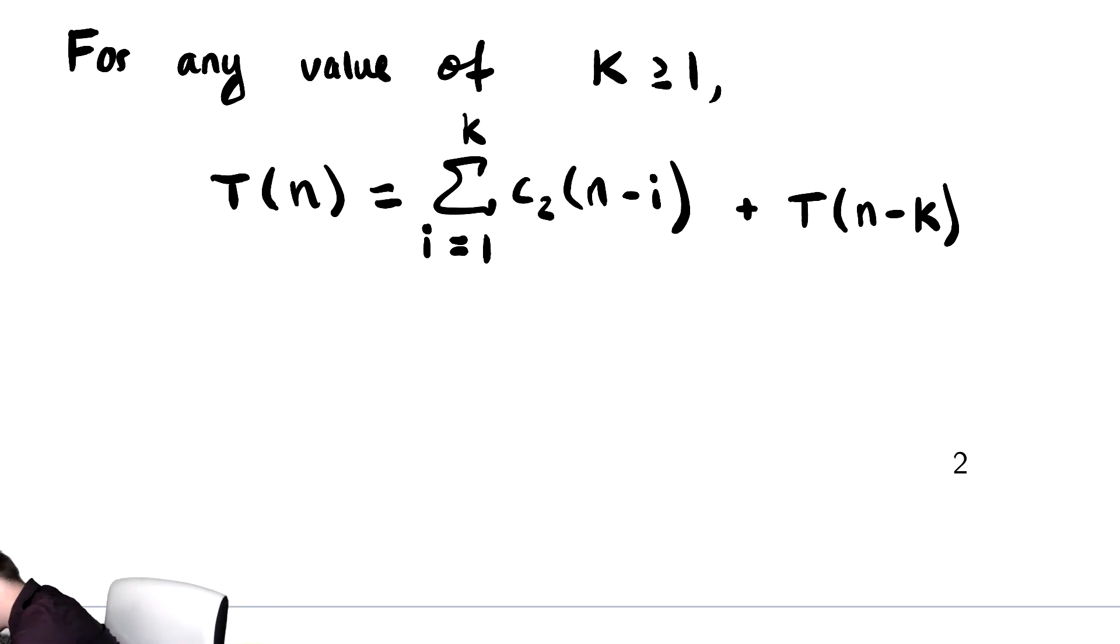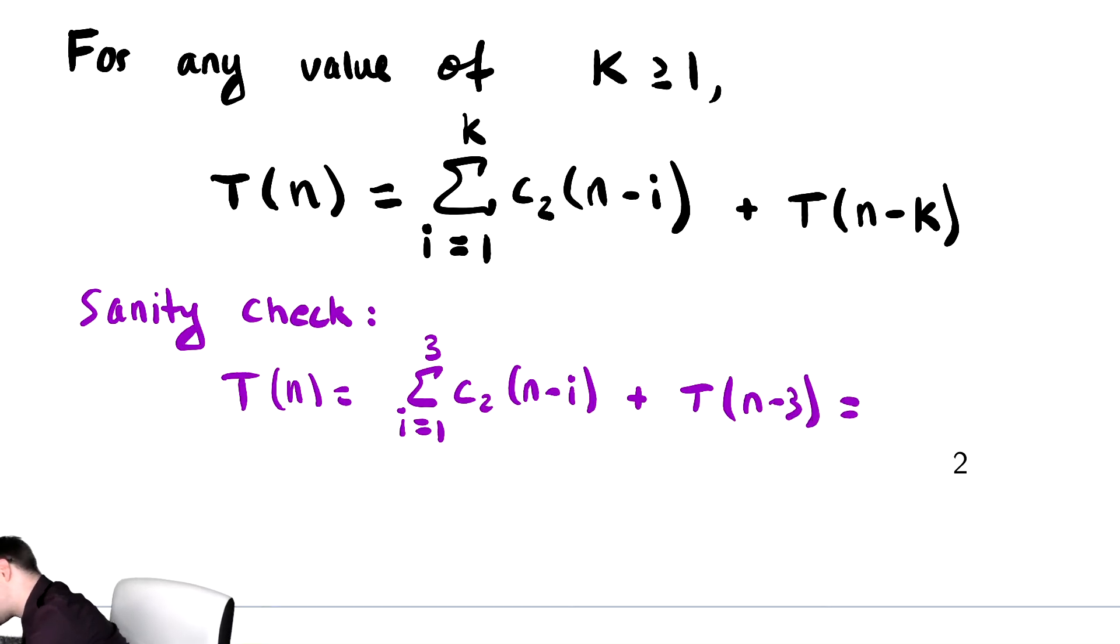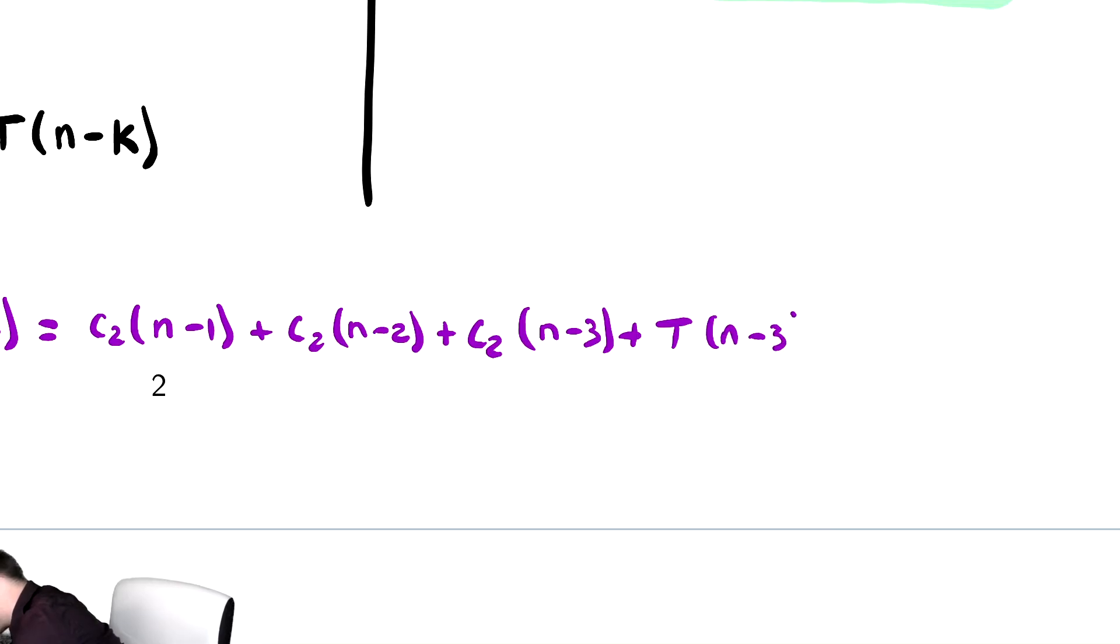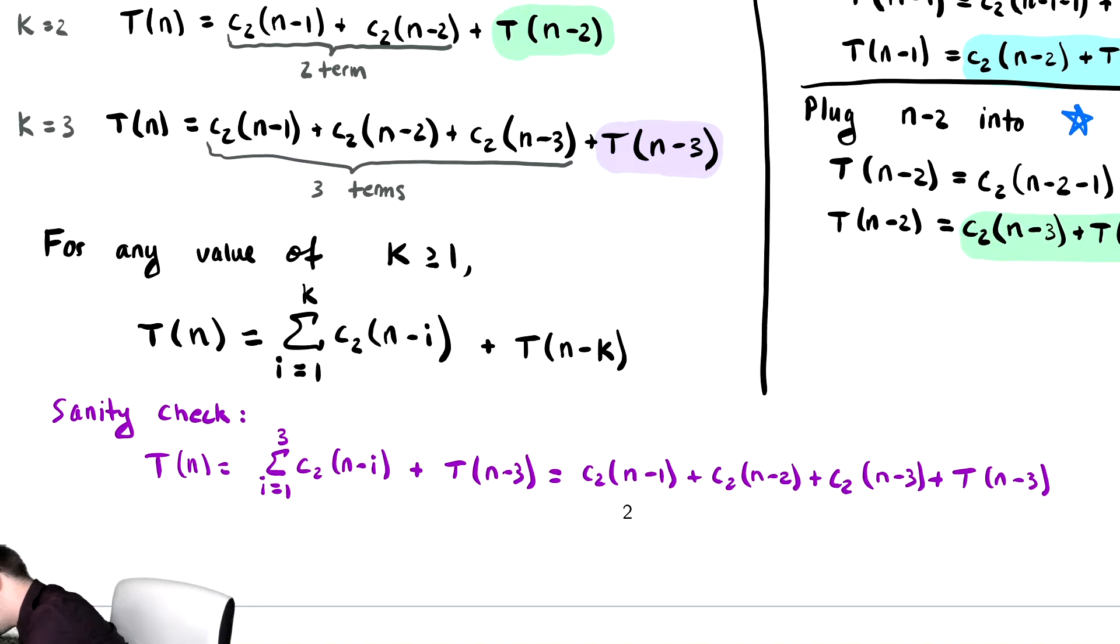Let's check this for at least one of these values of k and see that this does actually hold up. This is going to be a quick sanity check. I often do this but in my head, but for this problem, it is worth doing out explicitly because it's our first time seeing this done. So T of n equals, let's plug in k equals 3. That's the sum from i equals 1 to 3 of C2 times n minus i plus T of n minus 3. This summation says add up C2 times n minus i from 1 to 3. So my pattern claims that for k equals 3, I have C2 times n minus 1 plus C2 times n minus 2 plus C2 times n minus 3 plus T of n minus 3. And lo and behold, that is exactly what we have.